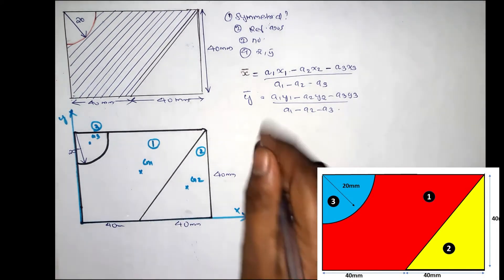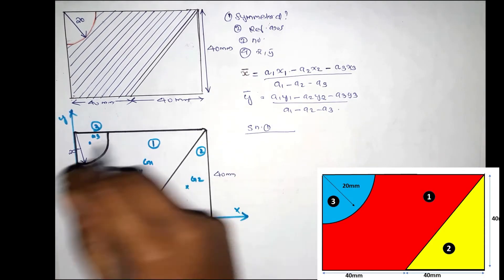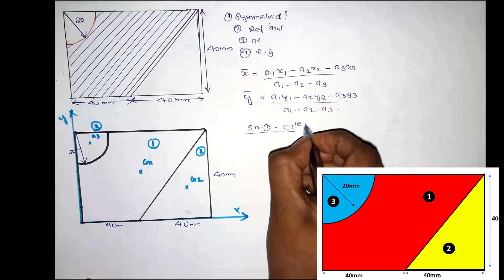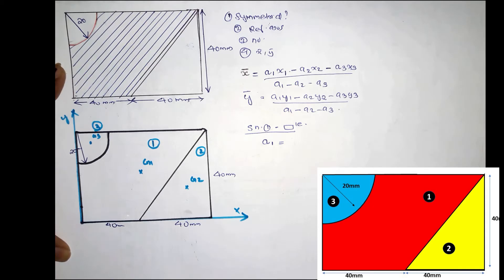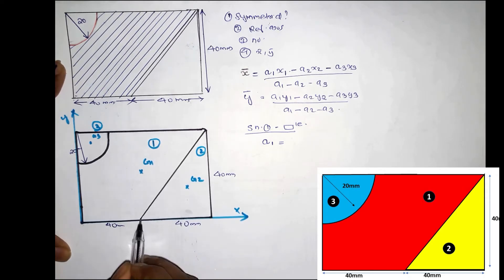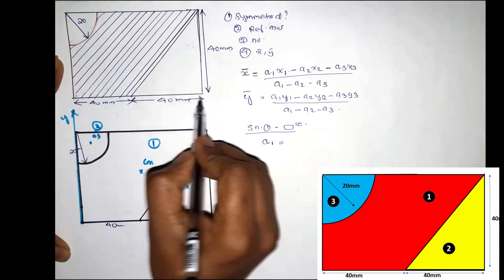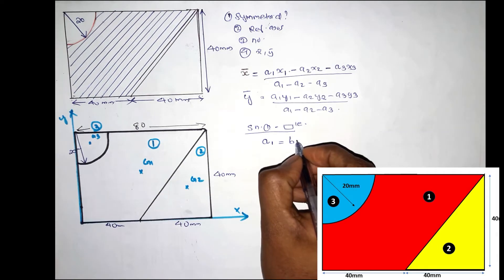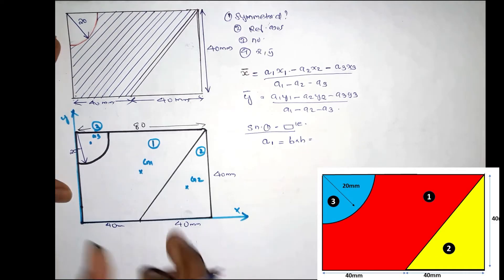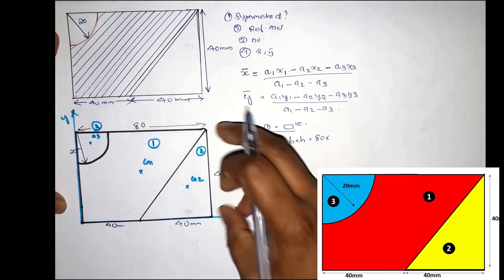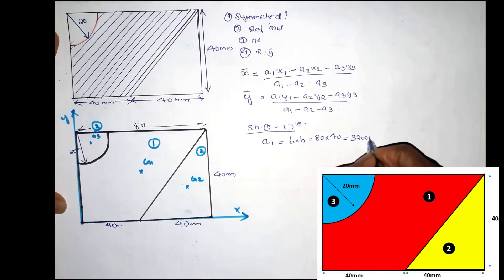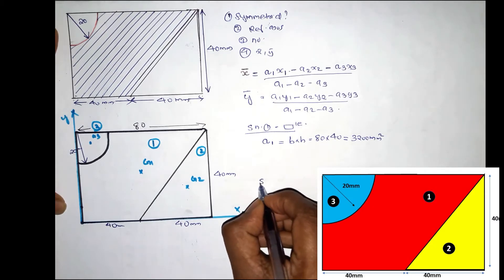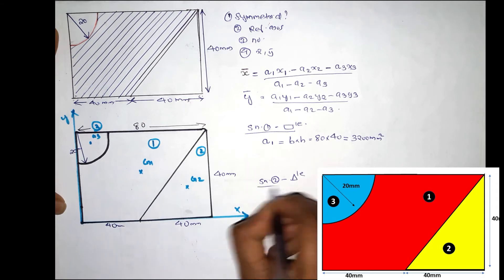Section 1 is the full rectangle. The rectangle area A1 = b × h = 80 × 40 = 3200 mm².